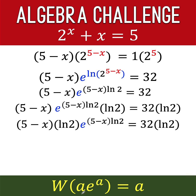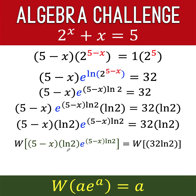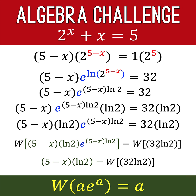Now let's check if we have the desired form a times e raised to a. The factor 5 minus x times ln 2 is our a, and the exponent of e is also 5 minus x times ln 2 — exactly the same a. So we now have the form a times e raised to a, which is what we want. Because of that, we can take the Lambert W of both sides of the equation. The left side simplifies by the Lambert W formula to just the exponent: the quantity 5 minus x times ln 2. The right side is just copied.